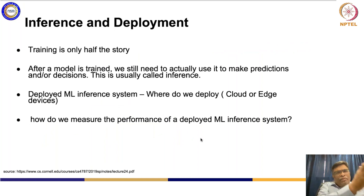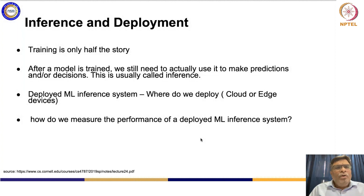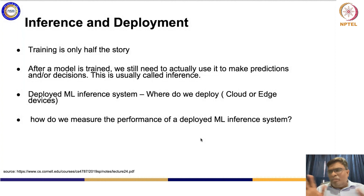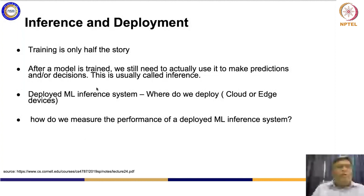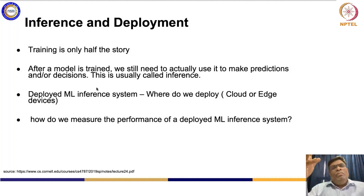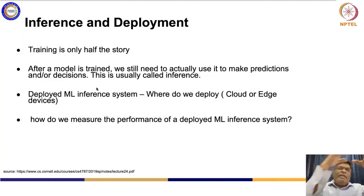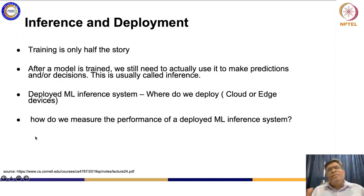Training is only half the story. You have done distributed training, training with various parameters, auto-tuning - everything. But after a model is trained, we still need to actually use it to make predictions and decisions. This is what is called inferencing. Once you deploy this particular model for achieving inferencing, that is when you call it a deployed ML inference system.